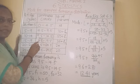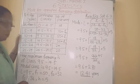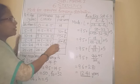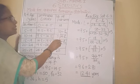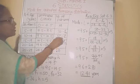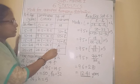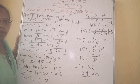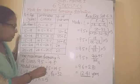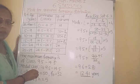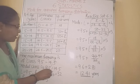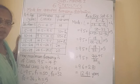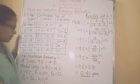Therefore the lower limit L is equal to 9.5. F1 — frequency of the modal class — is 50. F0 — preceding class frequency — is 32. F2 — succeeding class frequency — is 36. H is the class interval: upper class limit minus lower class limit of the modal class — 14.5 minus 9.5 equals 5. So H is equal to 5.